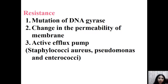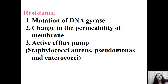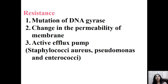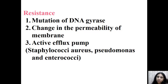Resistance to fluoroquinolones occurs mainly through mutation of DNA gyrase. Additionally, resistant bacteria may change membrane permeability to prevent fluoroquinolone entry through porin channels. Even if the drug enters, resistant strains of Staphylococcus, Pseudomonas, and Enterococcus develop active efflux pumps that expel fluoroquinolones, preventing them from reaching their target — bacterial DNA gyrase.